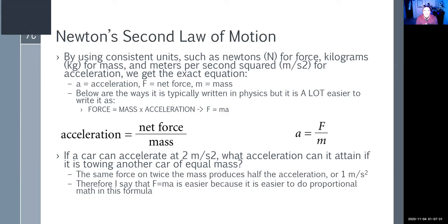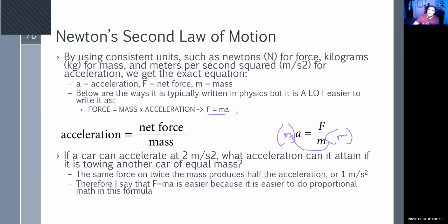I find it easier to write it as force equals mass times acceleration — F = MA. All I did was multiply both sides by M. You're free to use A = F/M if you want, but I find it a lot easier to do equations in my head if I get rid of a division. I've always taught it that way: F = MA, or force equals mass times acceleration.